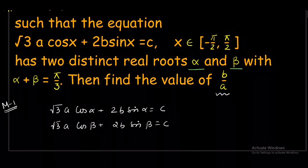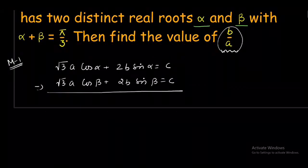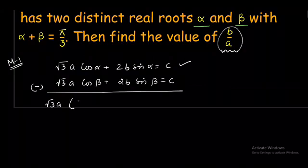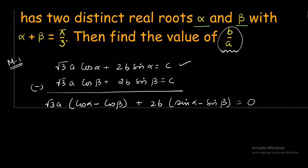In the final question we need the value of b/a. So that's why I am going to eliminate c. We don't need c in the final question. So subtract these two equations now to eliminate c. Subtracting gives us √3a(cos α - cos β) + 2b(sin α - sin β) = 0.